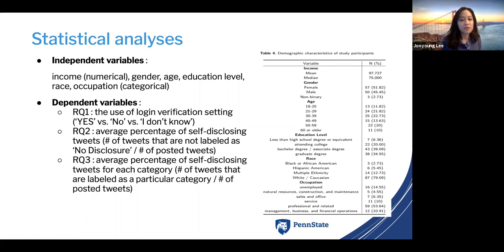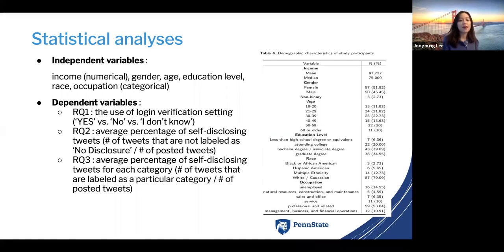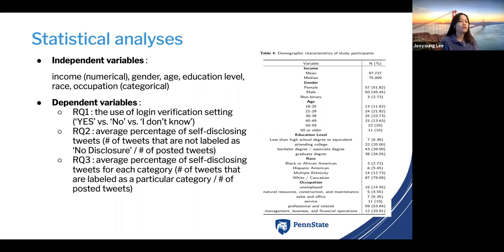For the first research question, the use of login verification setting — answered as yes, no, or I don't know — was collected from the survey. For research question two, we calculated and quantified the amount of self-disclosure for each user by calculating the average percentage of self-disclosing tweets per user based on collected tweets. For research question three, we similarly analyzed self-disclosure but for each personal information category separately.